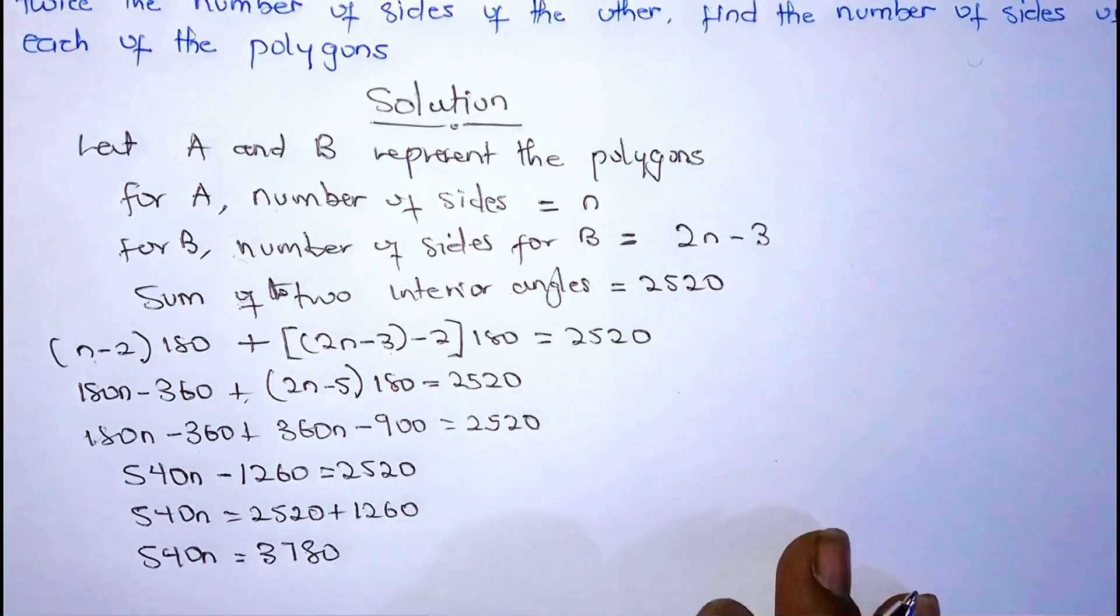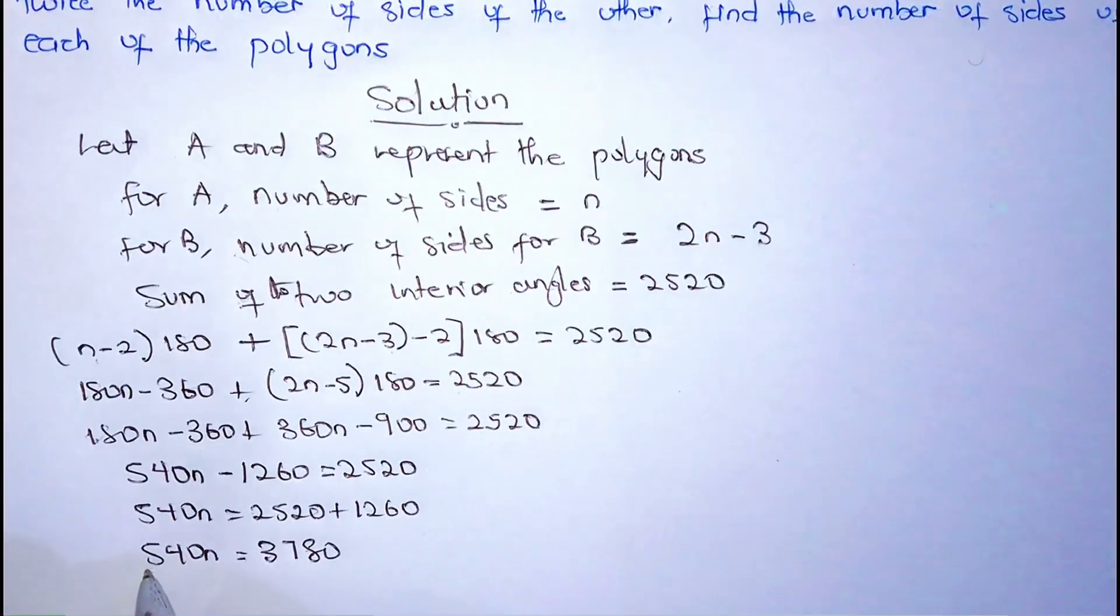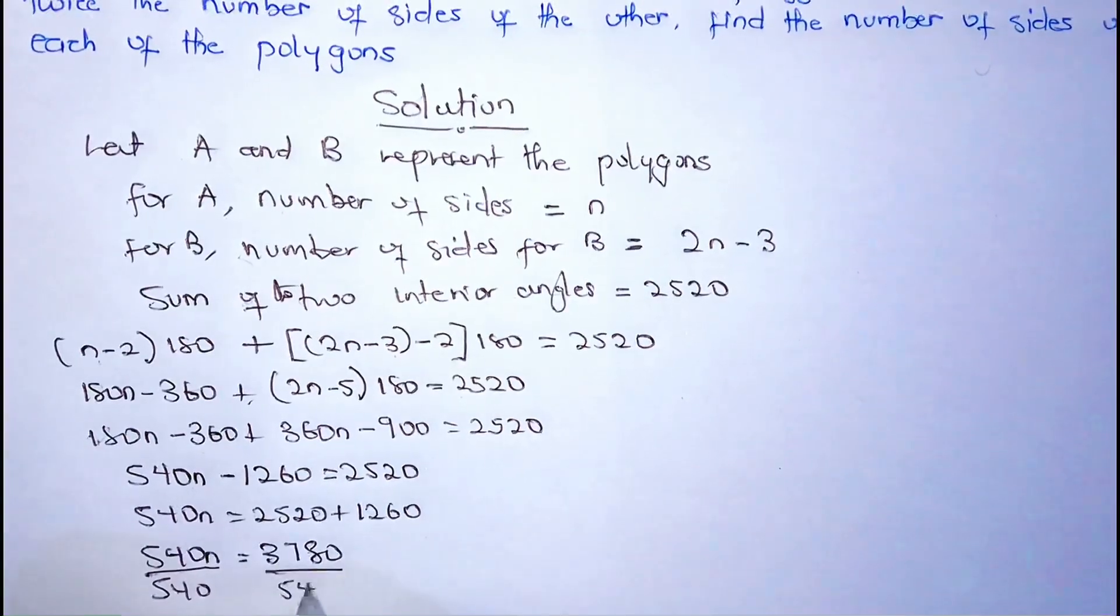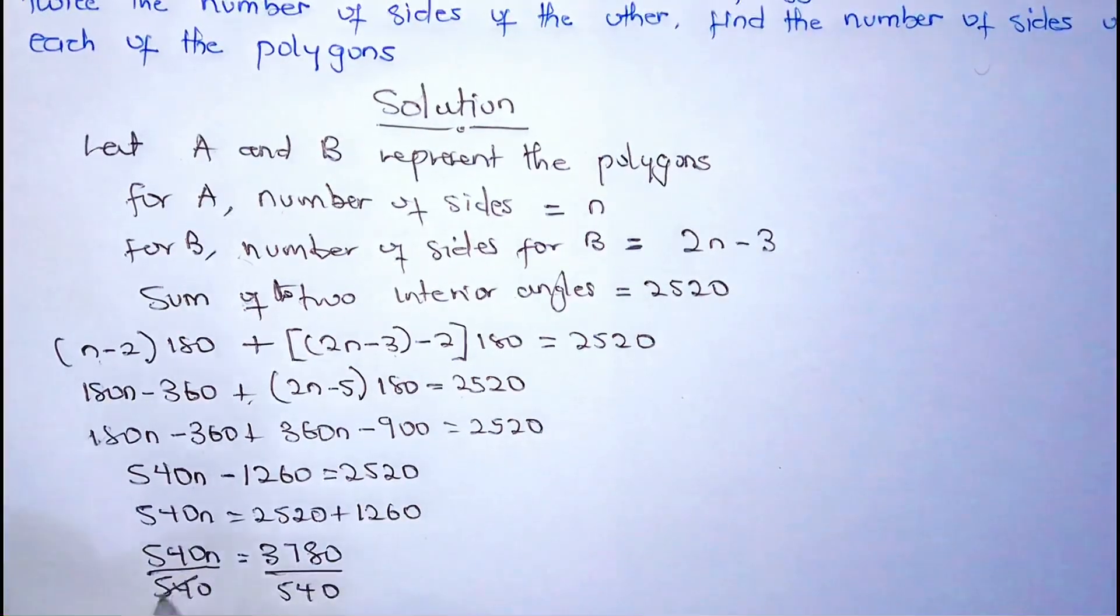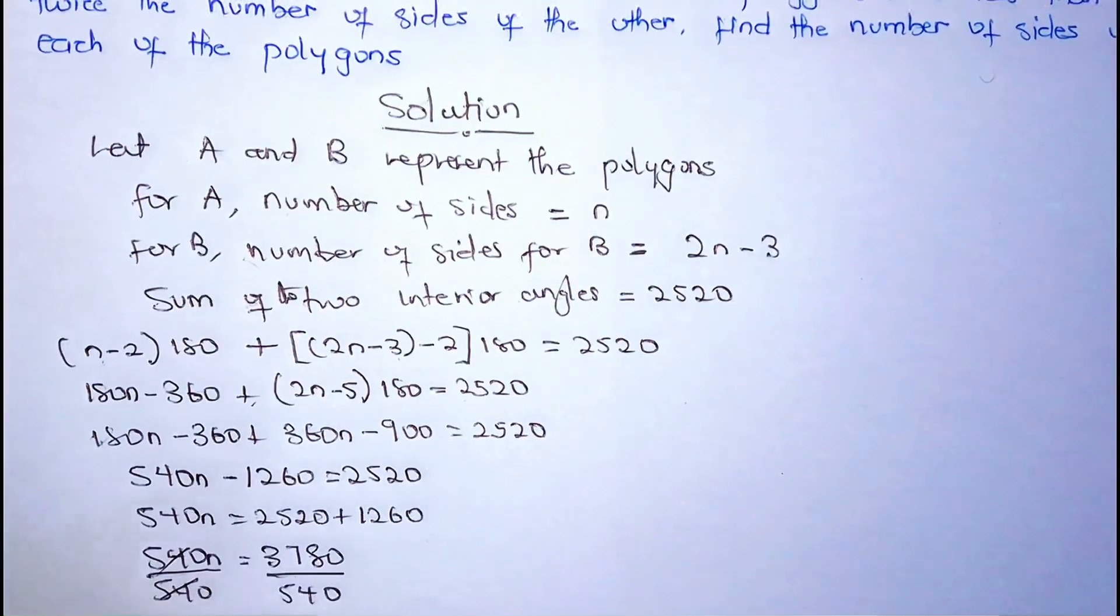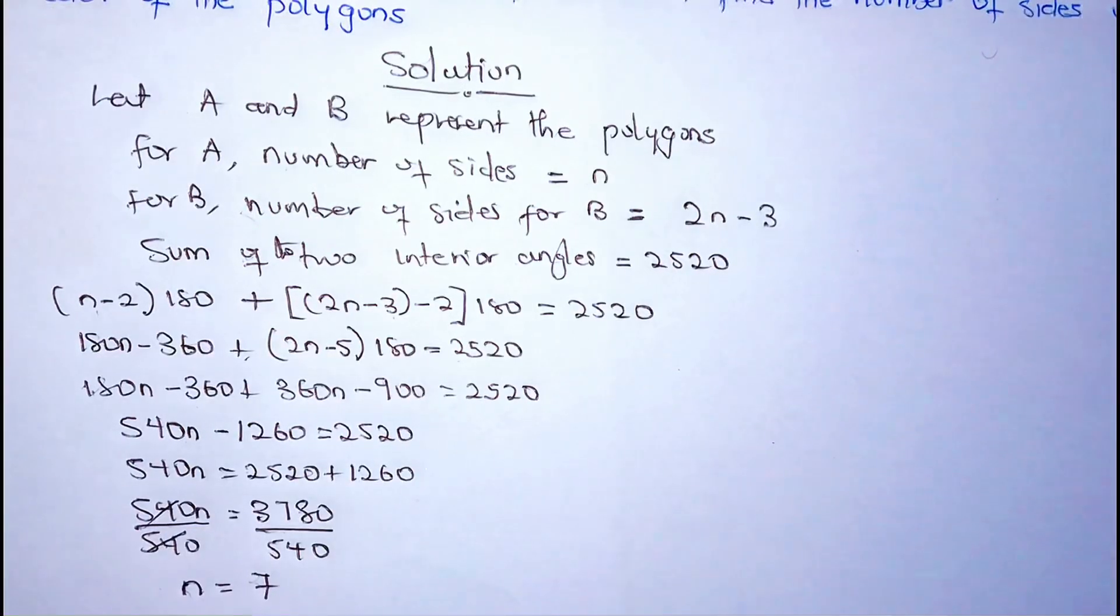So we want to find N, but we divide both sides by 540. N is going to be 7.